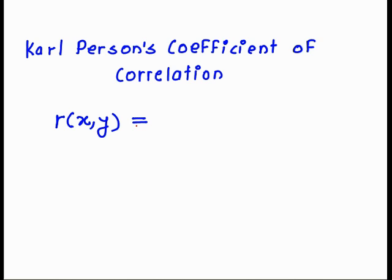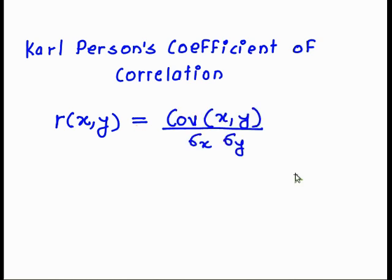The Carl Pearson coefficient of correlation is denoted by r of x, y, where x and y are the two variables. Here we want to find out a relation between x and y — that is a correlation. r(x, y) is equal to covariance of x, y divided by sigma x times sigma y.